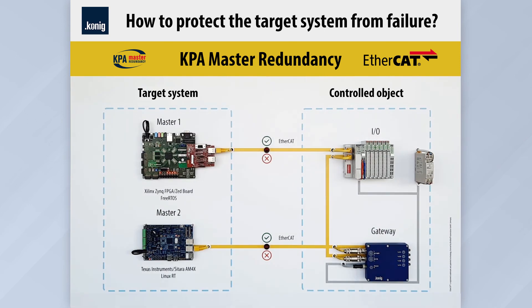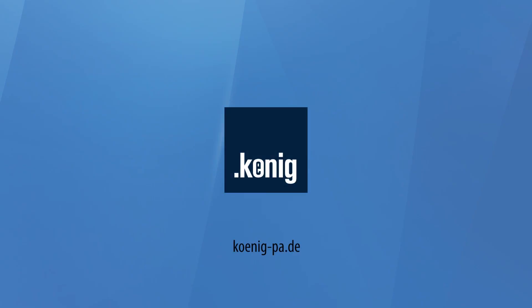The use of master redundancy technology allows you to keep the system operational in critical situations and prevent data loss even within one cycle. Master redundancy leverages the architecture of ATHICET technology to provide a cost-effective solution that significantly increases resiliency without sacrificing flexibility and performance. With this function, you can upgrade almost any industrial automation system with ATHICET support. Please contact Koenigpa GmbH anytime and our specialists will help you integrate master redundancy into your control system.